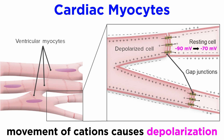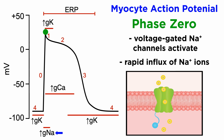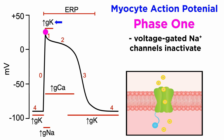Movement of cations through the gap junctions causes a small depolarization of the myocyte from approximately negative 90 millivolts to negative 70 millivolts, which is the threshold to trigger a new ion channel activation cascade similar to the SAN action potential. Once the myocytes reach negative 70 millivolts, voltage-gated sodium channels are activated. These are different from the HCN channels and are more typical of voltage-gated sodium channels throughout the nervous system, in that they activate quickly and cause a rapid influx of sodium ions. This is also known as phase 0. Phase 1 occurs at about 40 millivolts and is marked by the voltage-gated sodium channels inactivating and closing, and voltage-gated potassium channels opening, causing an initial repolarization through potassium ion efflux.